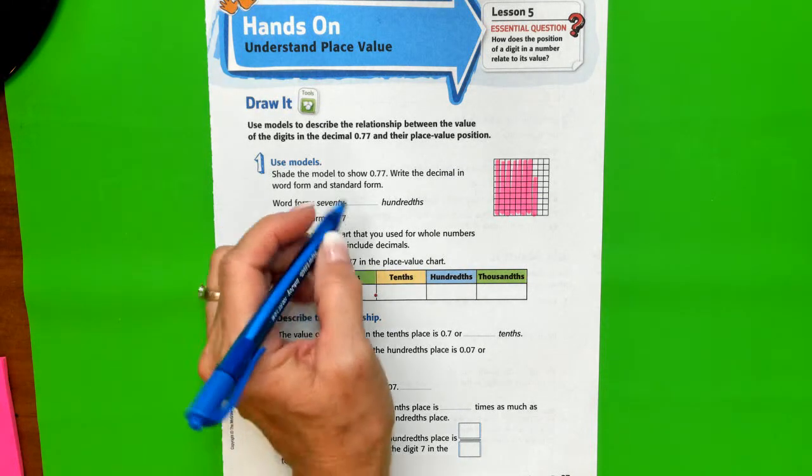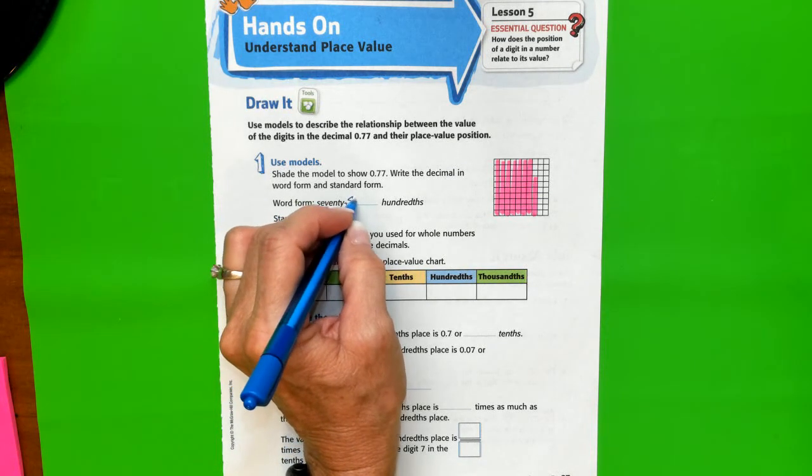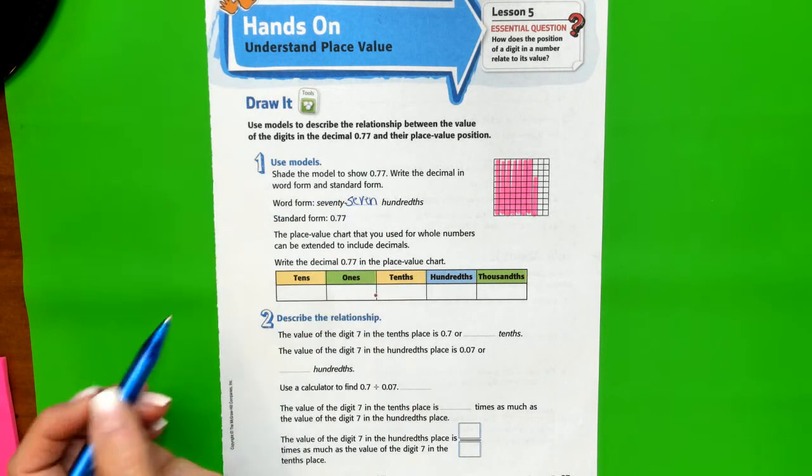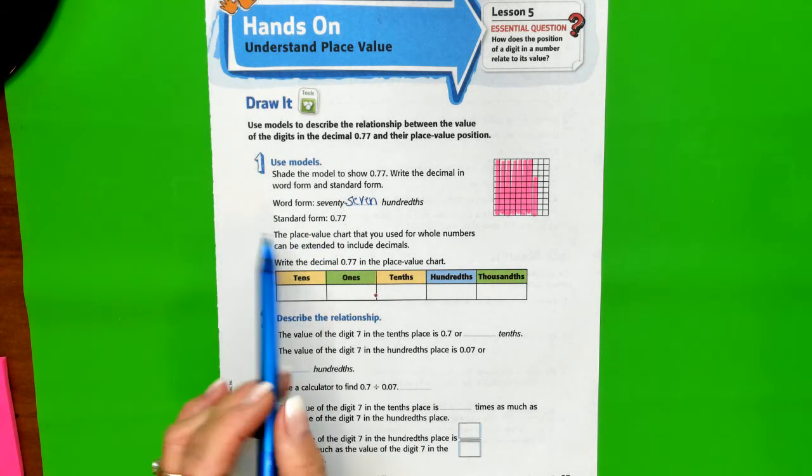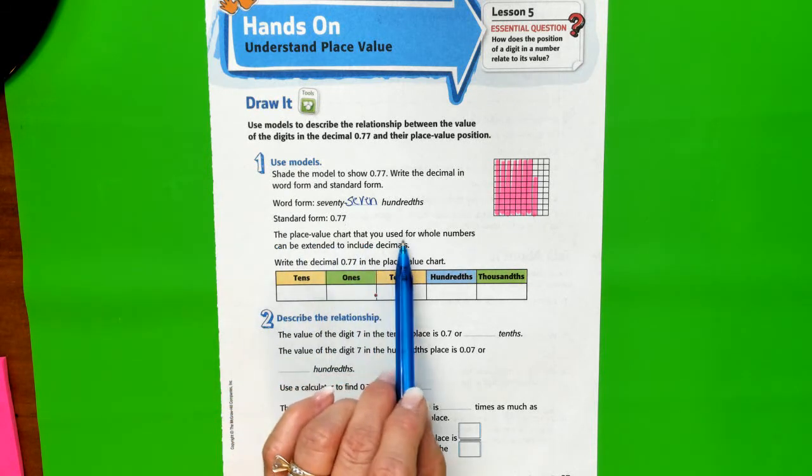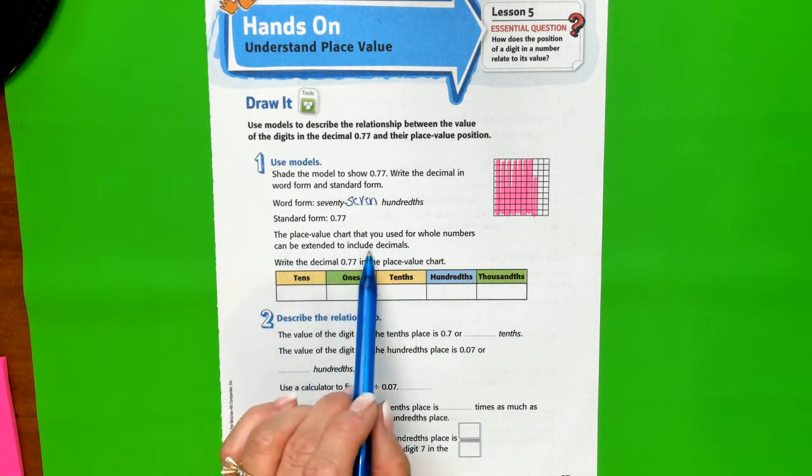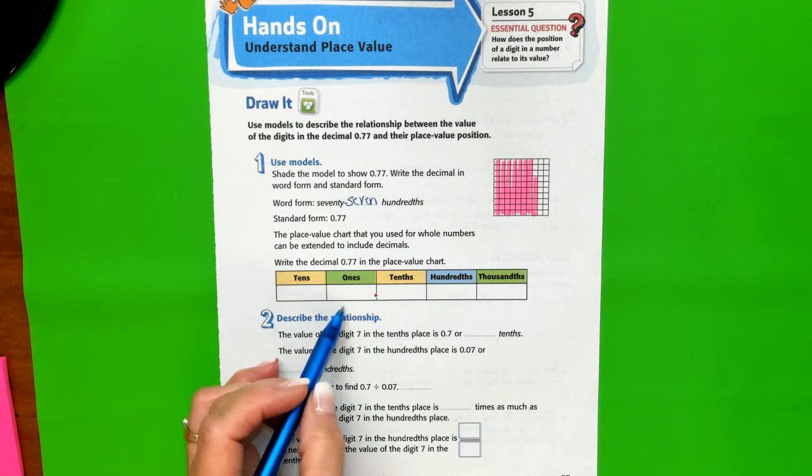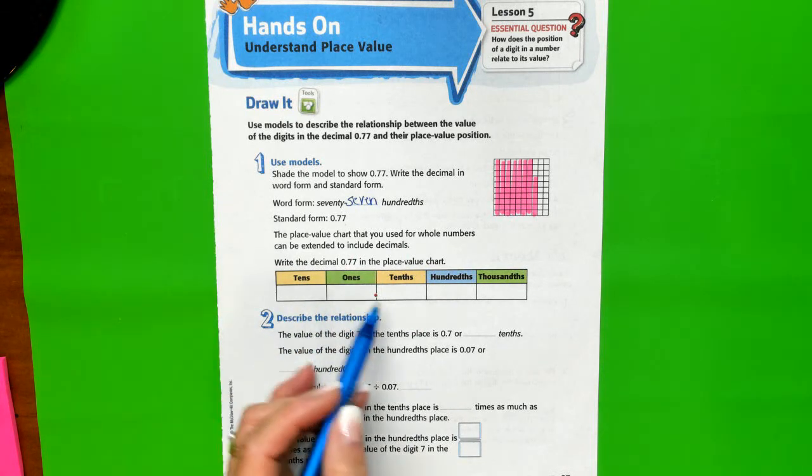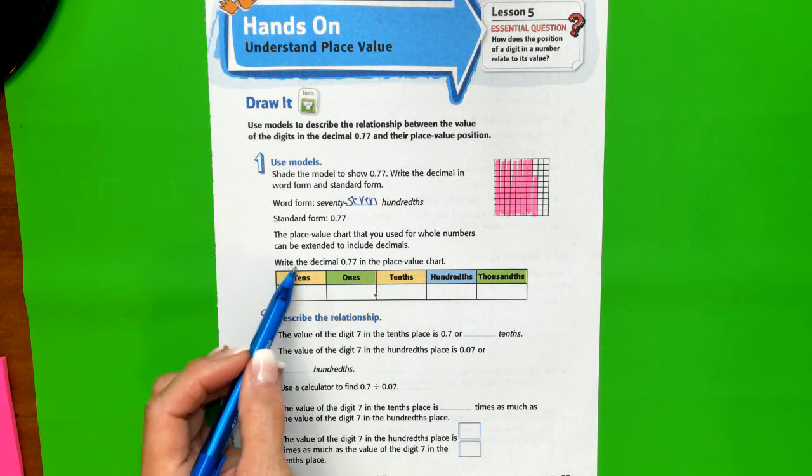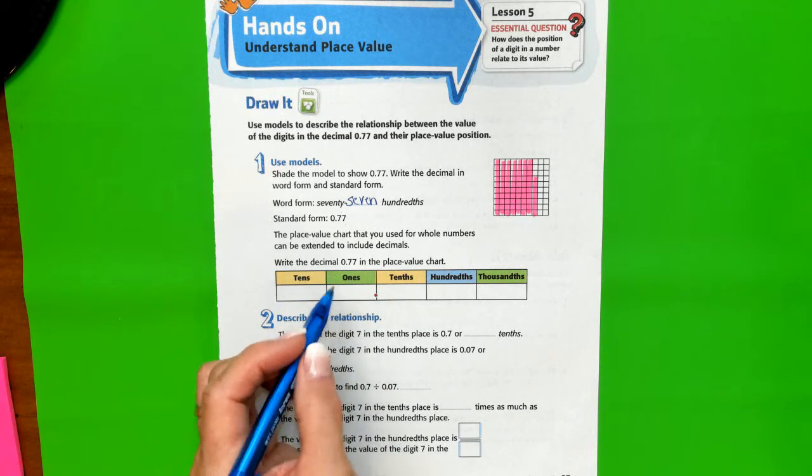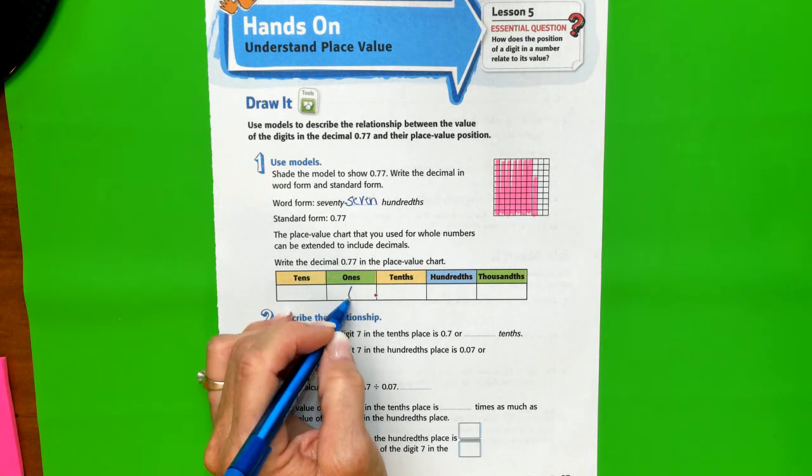In word form we're going to write seventy-seven hundredths. Standard form is 0.77. The place value chart that you used for whole numbers can be extended to include decimals. Whole numbers are on this side, decimals are behind the ones place.